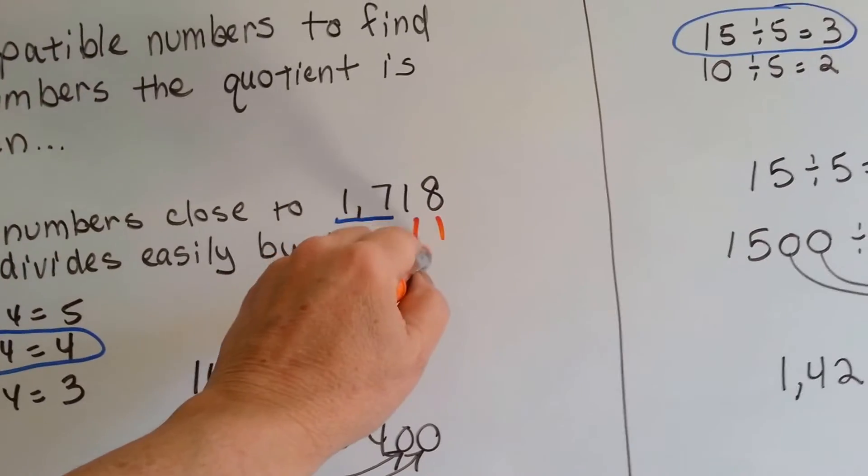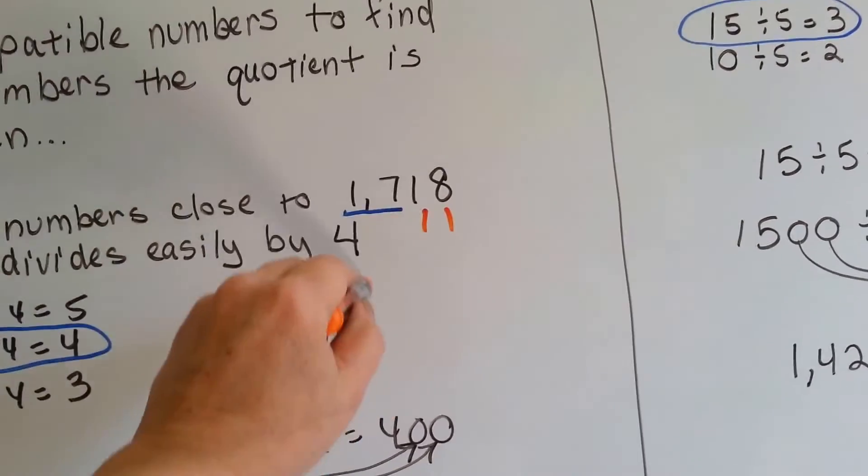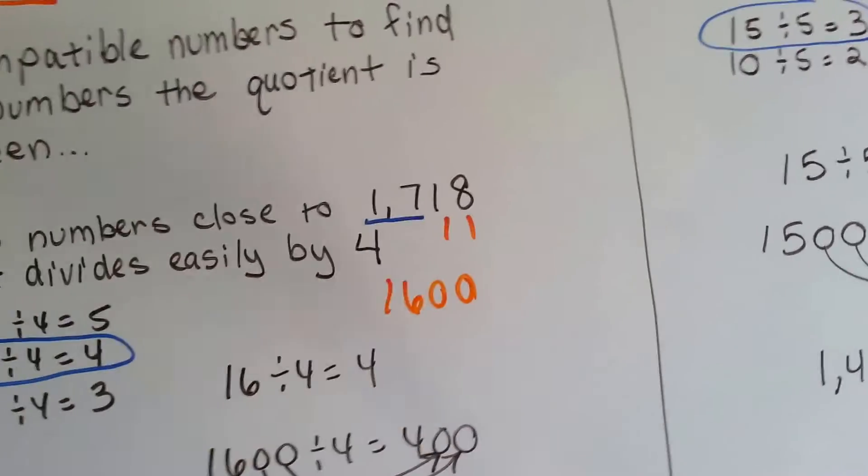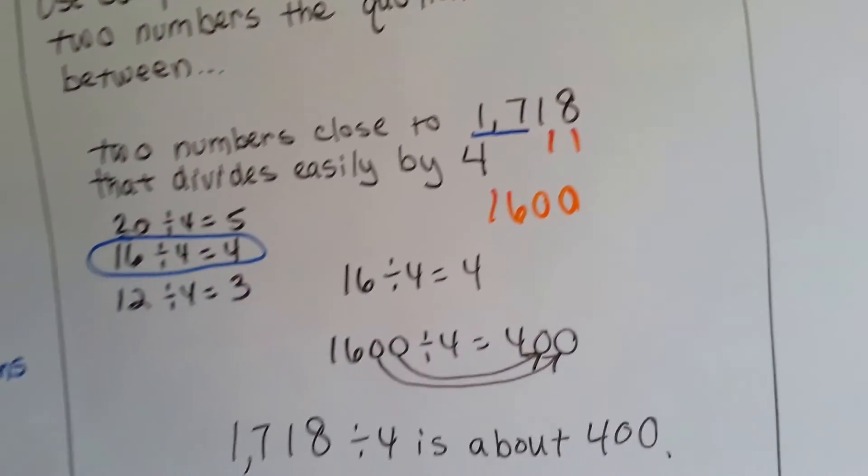When we estimate, the remaining digits become zeros, so 1718 becomes 1,600. So 1,600 divided by 4 equals 400.